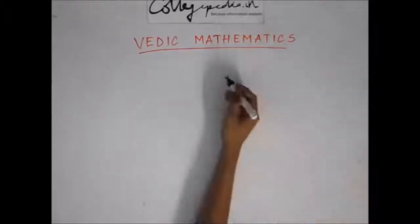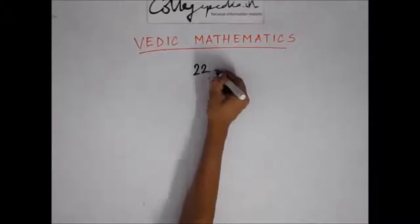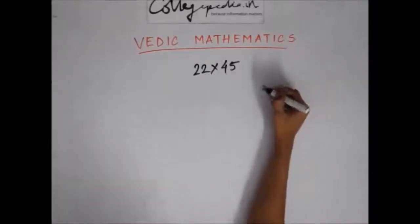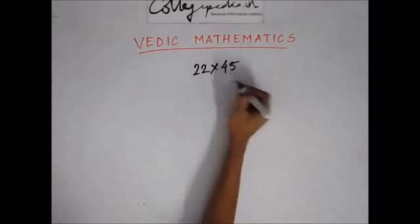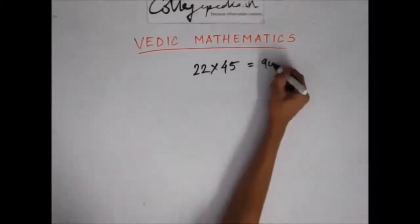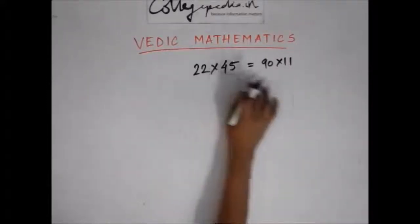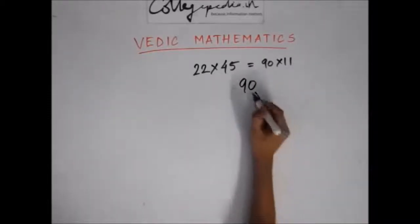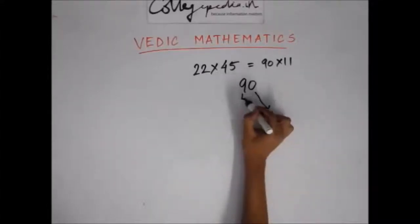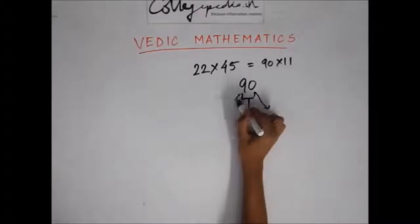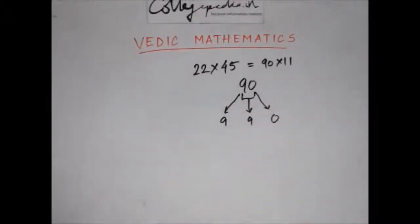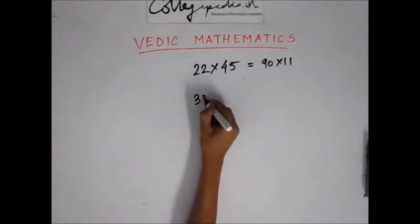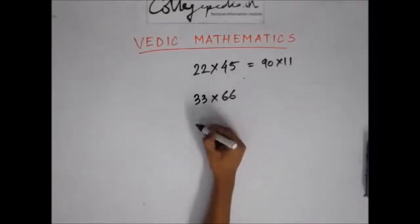This method can also be used when one of the numbers is a multiple of 11. For example, 22×45: you can rewrite this as 90×11, since 22 = 2×11 and 45×2 = 90. Now applying our method to 90×11: last digit is 0, sum of digits 9+0=9, and first digit is 9. So the answer is 990.